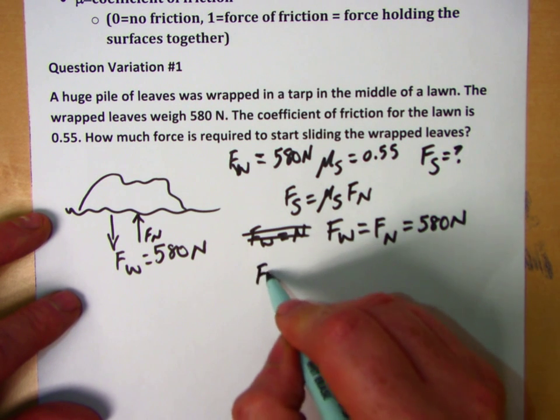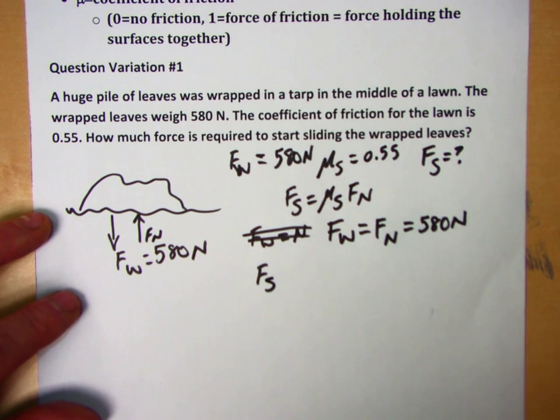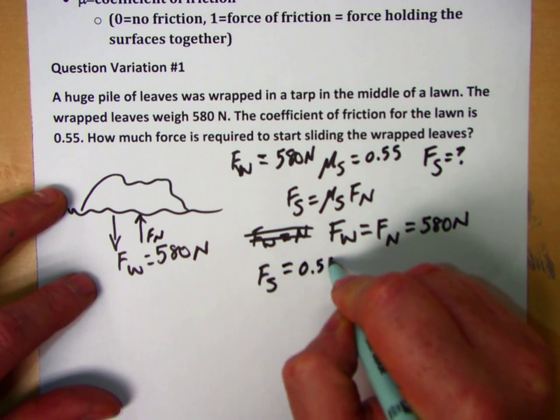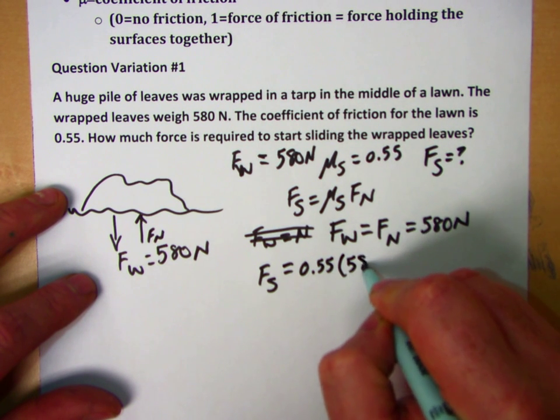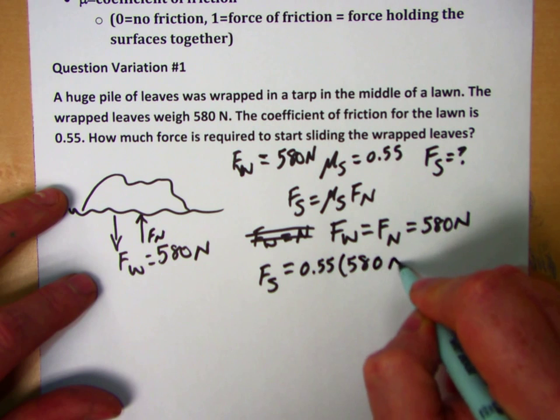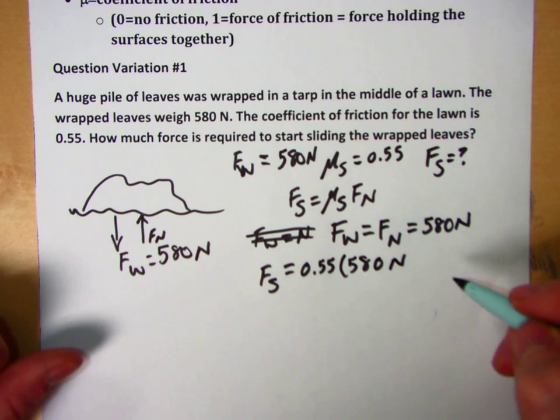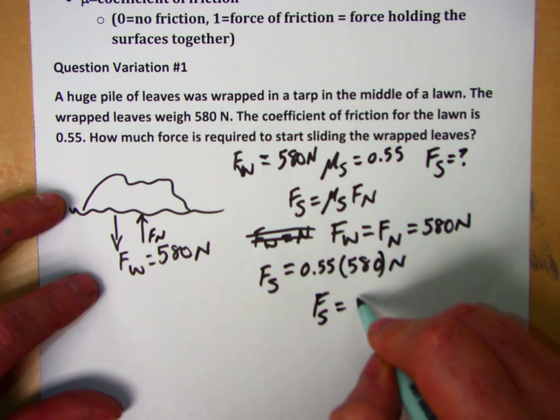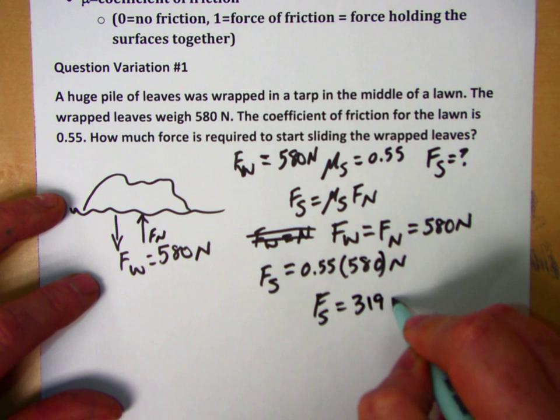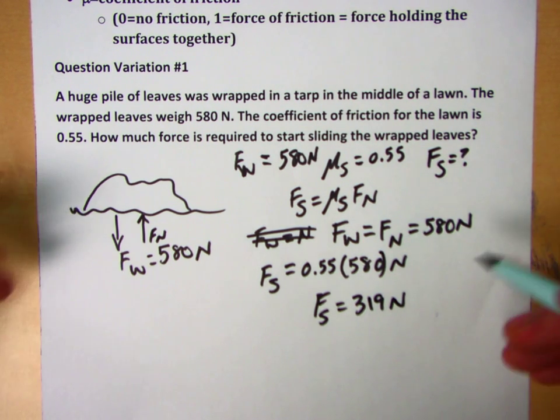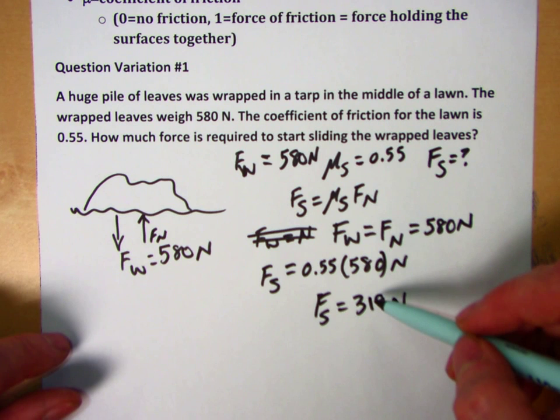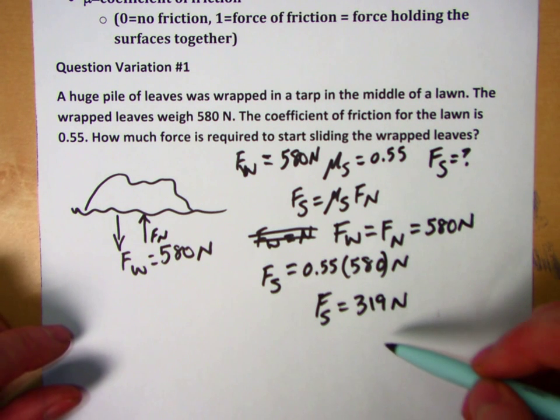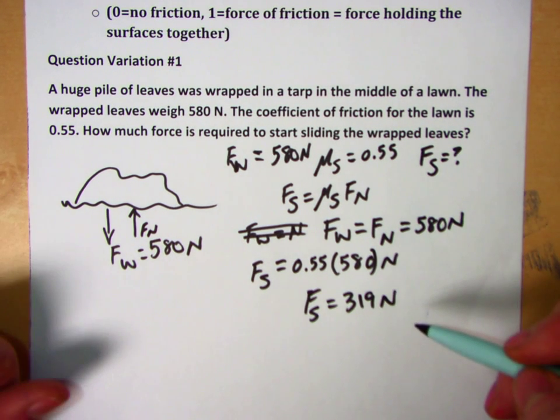So now I can go ahead and plug in my values. Force of static friction is equal to 0.55 times 580 newtons. And if I go ahead and multiply those together, I'm going to get force of static friction is equal to 319 newtons. So the way you read this is we need to overcome a static friction force of 319 newtons to move the leaves. Anything less than that and the leaves aren't going to budge.